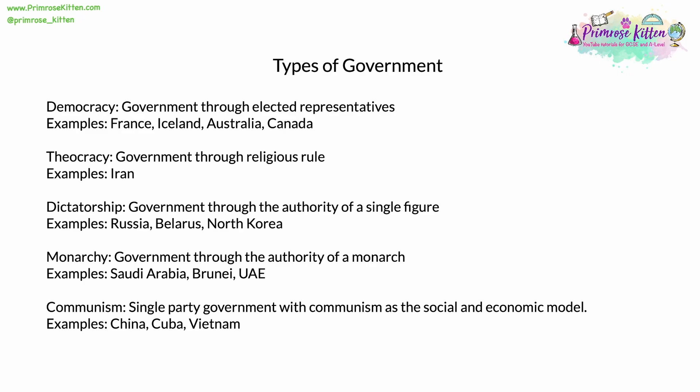A theocracy is a government through religious rule. This was the case for much of history for many countries where religion was the primary force of rule, and often religion was used to prop up a monarchy. There are very few examples of religious rule currently around the world. Iran is currently the only country with a completely religious basis — it is an Islamic Republic — although there are elements of democracy there. Other countries also identify as Islamic Republics, however Iran is definitely the most extreme example.